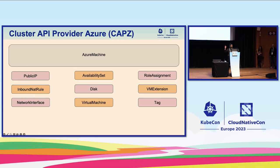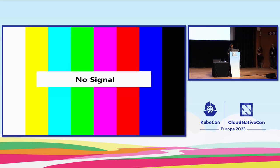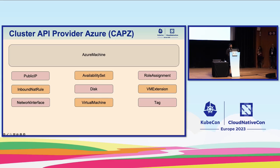Similarly for Azure machines, when reconciliation happens, the CAPZ operator creates public IPs, inbound NAT rules, network interfaces, and finally the virtual machine on Azure infrastructure. The creation of VMs uses pre-built VM images via image builder, so when the VM boots up, bootstrap provider setup via cloud-init executes commands from kubeadm to give you a Kubernetes node.